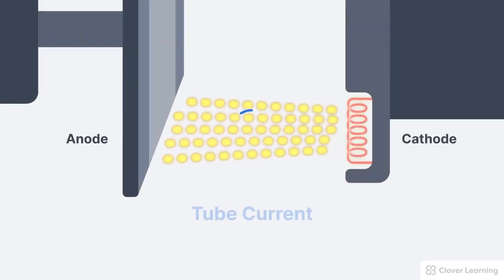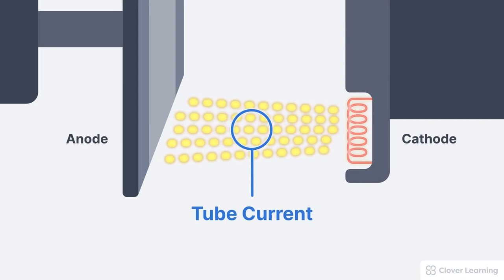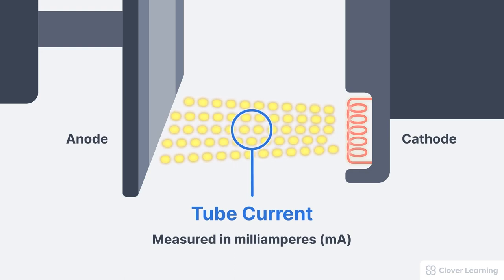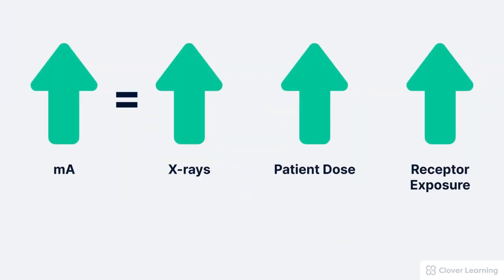So in summary, tube current refers to the flow rate of electrons through the x-ray tube. We measure tube current in units of milliamperes, which is abbreviated MA. We also need to understand these basic relationships. When we increase the MA on the control console, this will increase the total number of x-rays produced, which increases the patient dose and increases the receptor exposure. You'll notice that MA does not affect the electron energy or the x-ray beam energy.